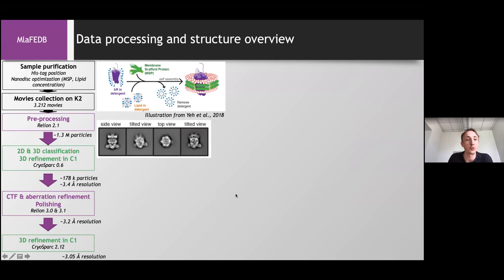So here, I only highlight the steps which did seem to matter the most in the whole data processing that we've done. So first one, and you will see later why, it was important to look at the structure in C1 without any symmetry applied. And then regarding the resolution, the steps which helped us to push the resolution from about 3.4 to 3.1, was to take advantage of the CTF and aberration refinement and polishing steps in Relion, and finally finish with the 3D refinement in CryoSPARC.